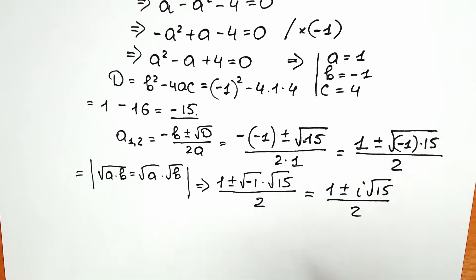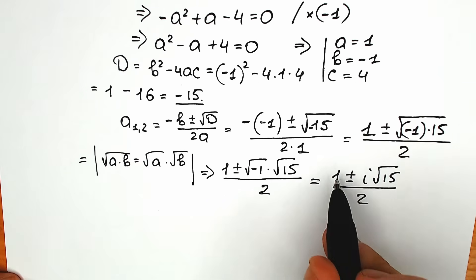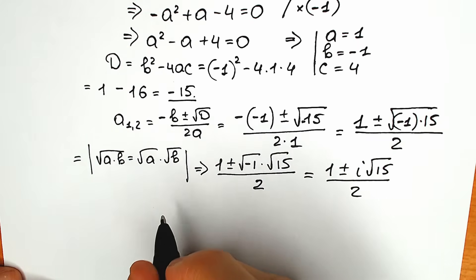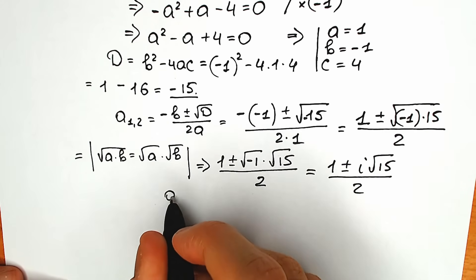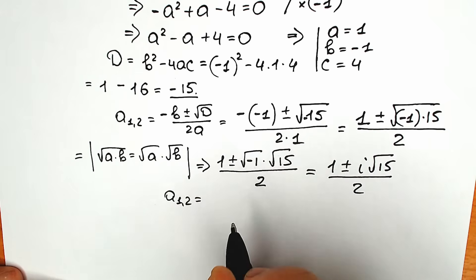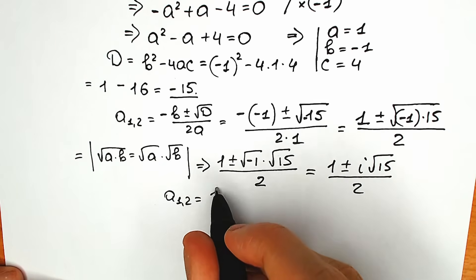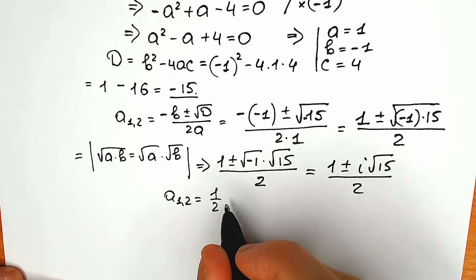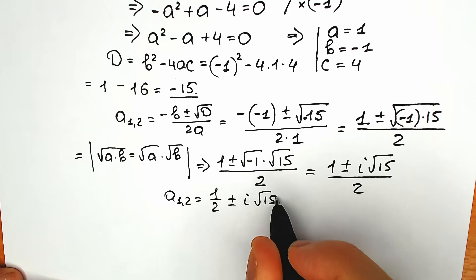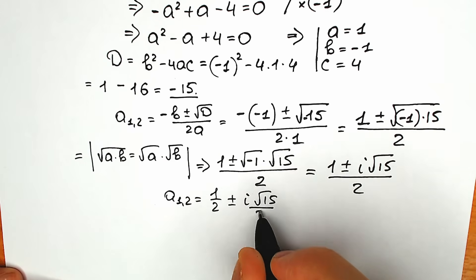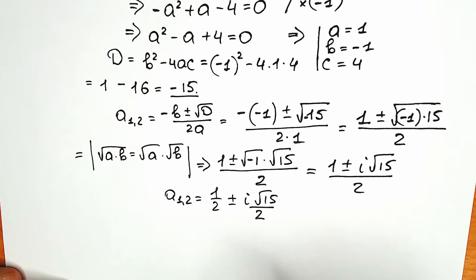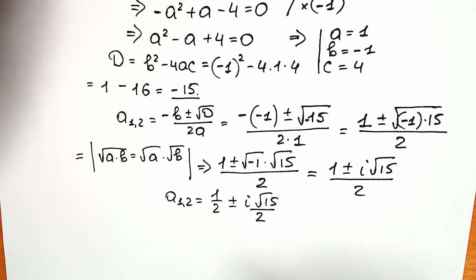Many students are interested in the real and imaginary parts separately, so let's split the numerator by 2. Our two solutions are: a₁ and a₂ equal to one-half plus or minus i times square root of 15 over 2. These are our two complex roots.